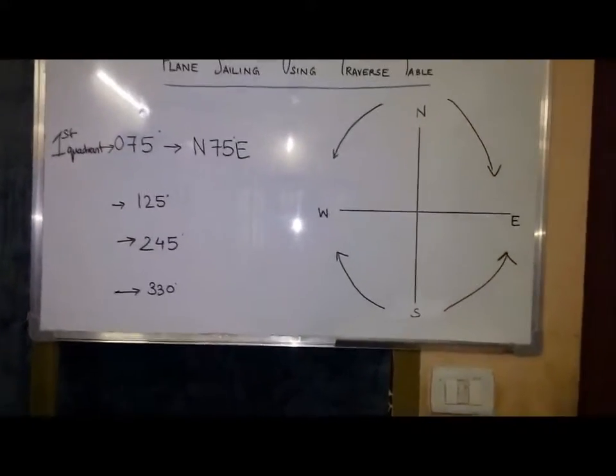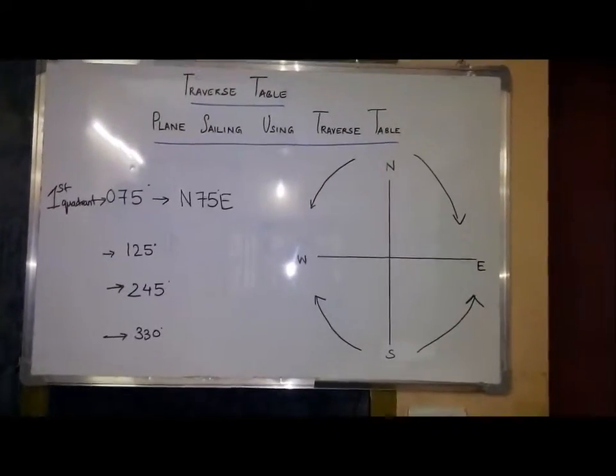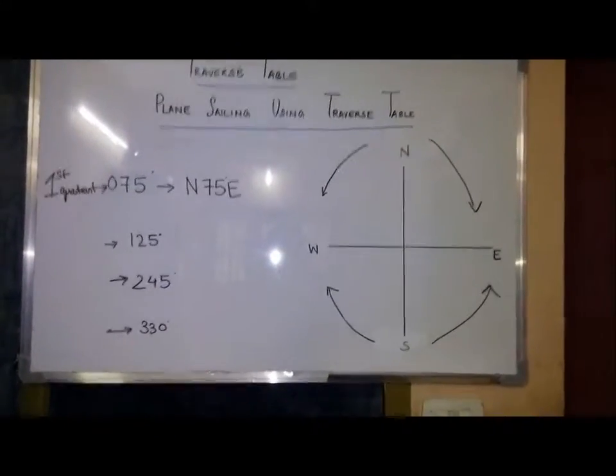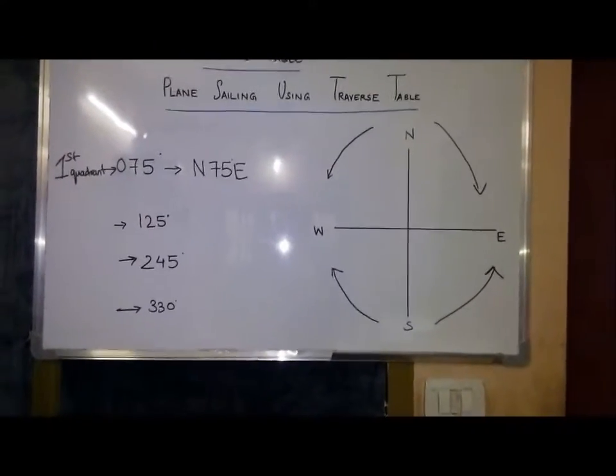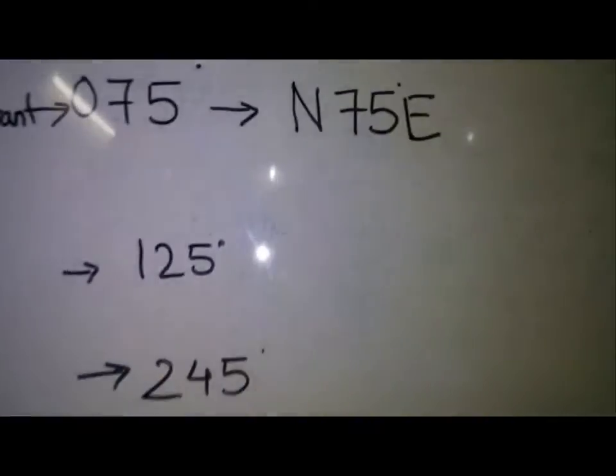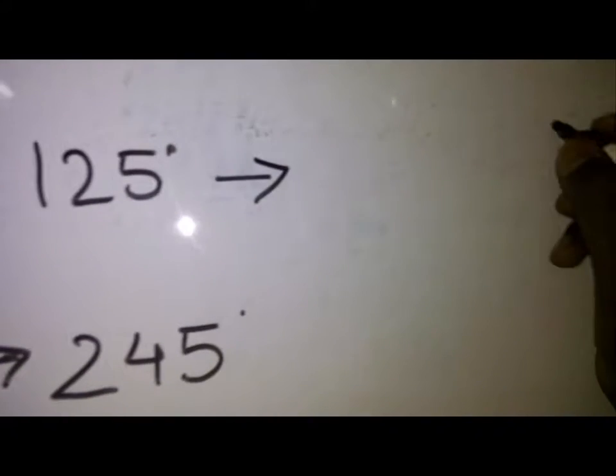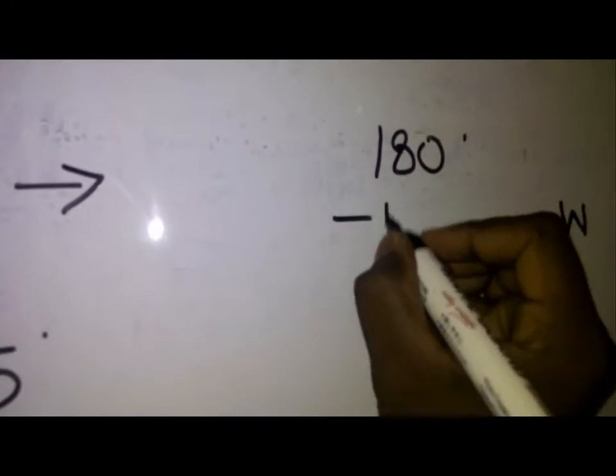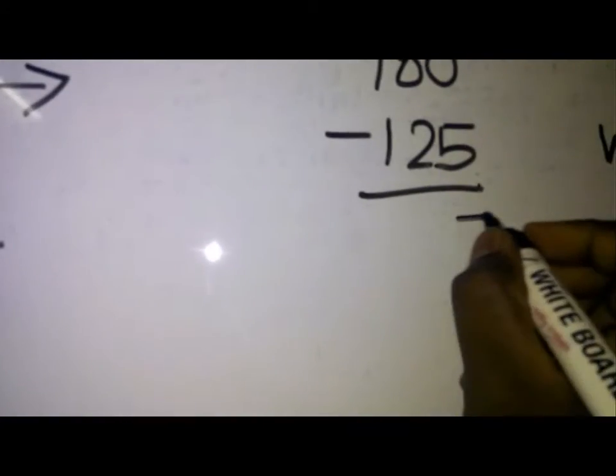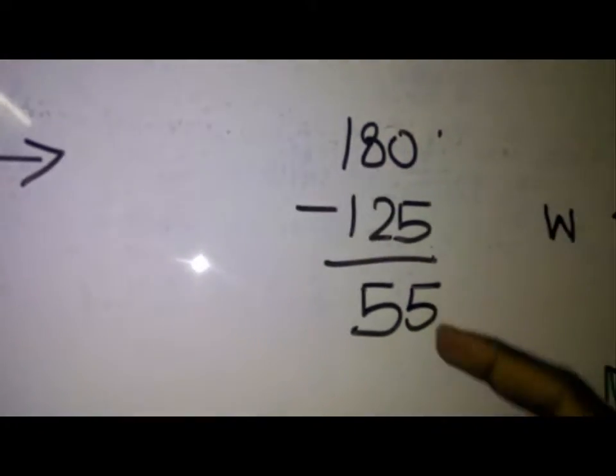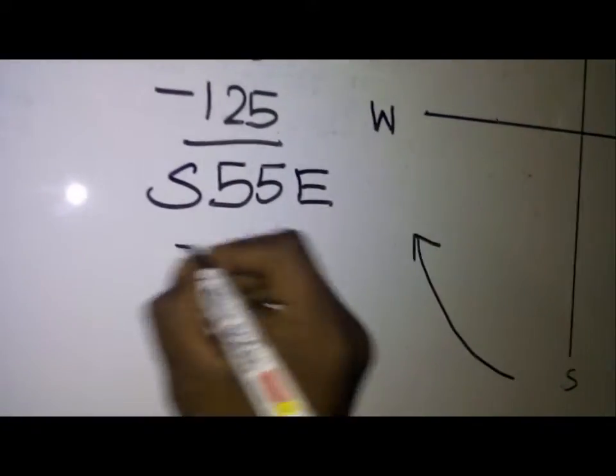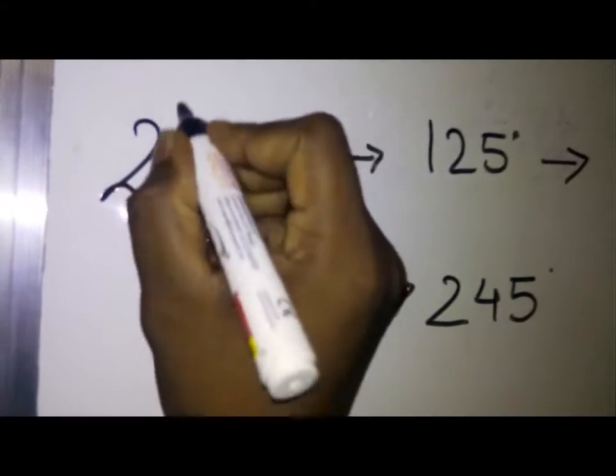Next is 125. 125 will be in the second quadrant. To convert that, you can see the arrow indication provided from south to the east. So you just have to subtract it from 180. So it will be 180 minus 125, which results in 55. Now the direction, this is from south to the east. So it will be south 55 degrees east. So this comes in the second quadrant.